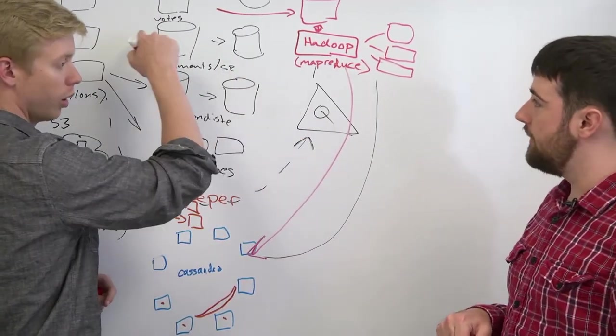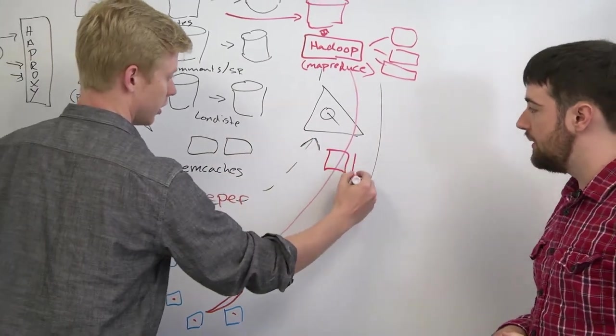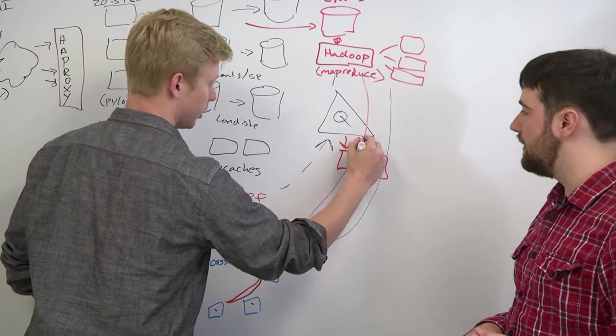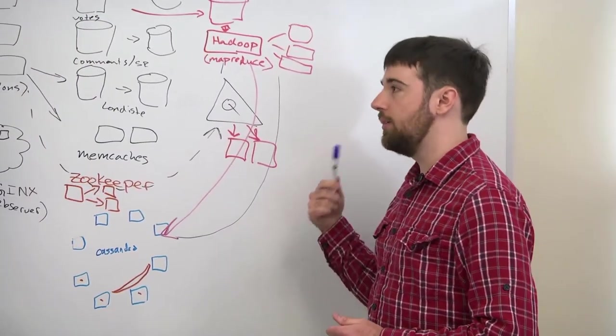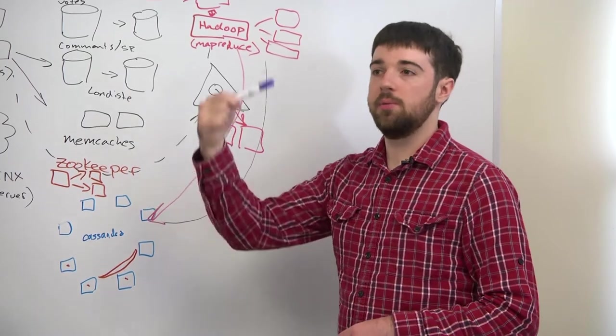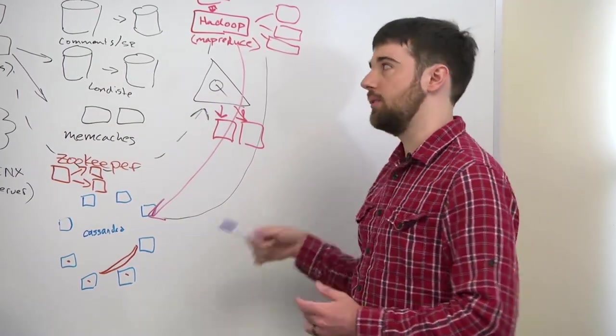So all these app servers are writing a vote happened to the queue. And then you've got a bunch of machines that are reading from the queue. What they do is they sit there, pull that out, and then they say, OK, that means I have to update these listings, and I have to record the vote in Postgres and Cassandra.